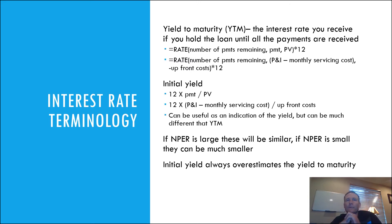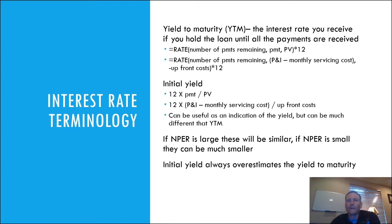Another thing I want to touch on is what I call initial yield — just taking 12 times the number of monthly payments divided by the price you pay to get an initial indication of the yield. I've actually seen one guru recommend using this, but you want to be super careful because it can sometimes give you a very different yield than what you're going to get from yield to maturity. If the number of payments remaining is really large, then the two are going to be pretty similar. But if the loan is getting closer to maturity and the number of payments is smaller, the initial yield could potentially grossly overestimate the yield to maturity. I really don't recommend using it.